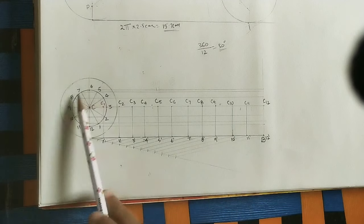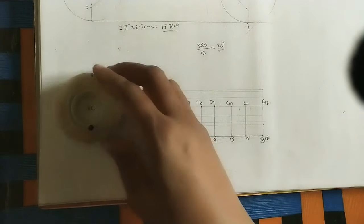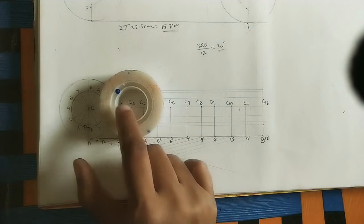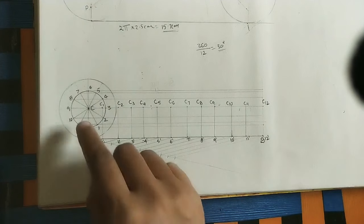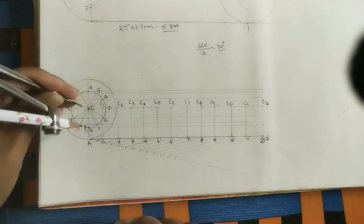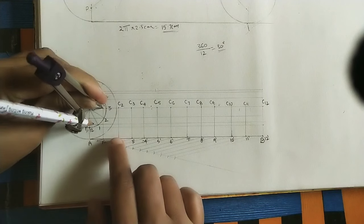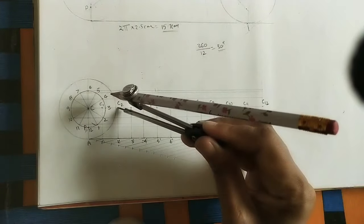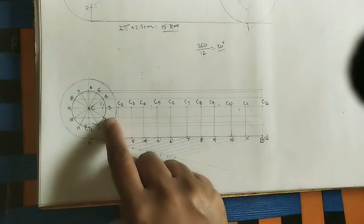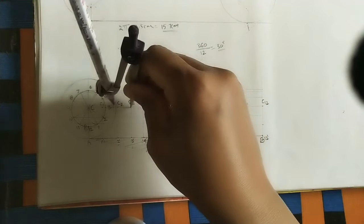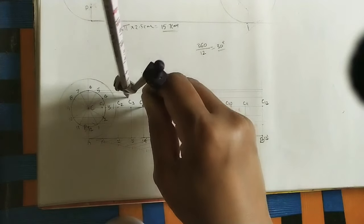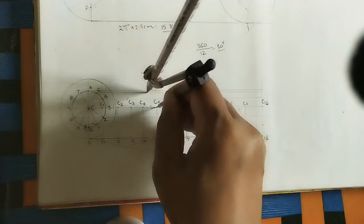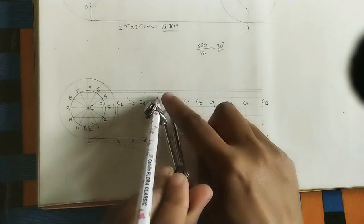Now these centers C1, C2, C3... represent positions of the circle center as it rolls. The distance from center to P remains constant as CP distance. So with C1 as center, draw an arc of radius CP on the first horizontal line — that intersection gives the new P position. With C2 as center, mark on the second line. With C3 on the third line, C4 on the fourth, C5 on the fifth, C6 on the sixth.